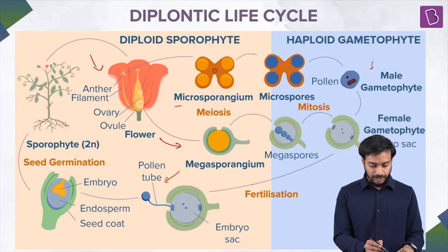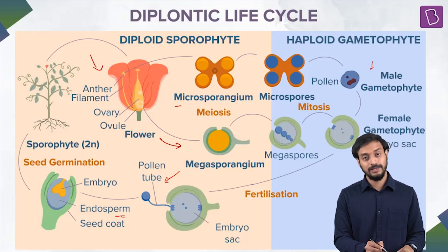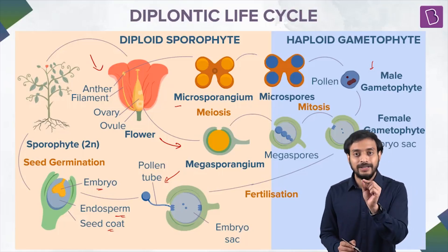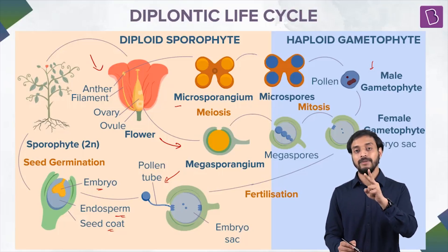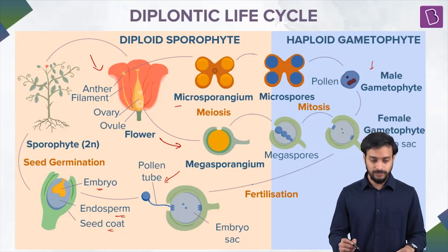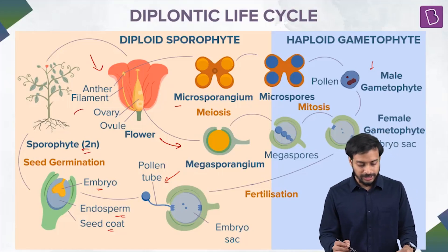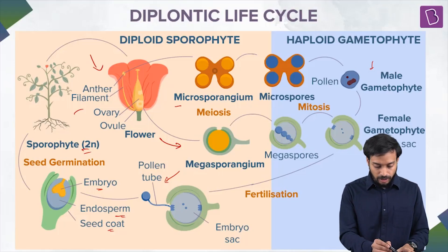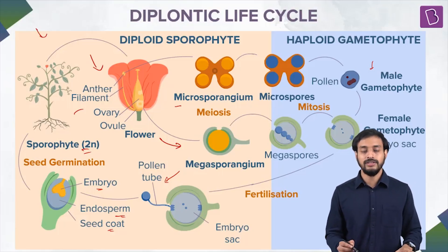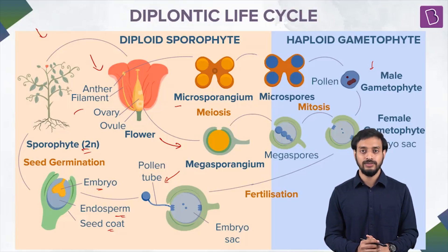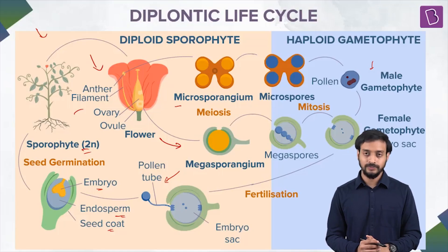From the primary endosperm nucleus, the endosperm forms. The embryo forms after fertilization with the egg. From there we get the seed coat, and then seed germination produces the sporophyte. The majority of the diploid lifecycle is taken by the sporophyte — the diploid stage is dominant.